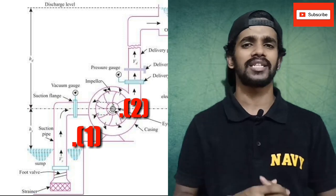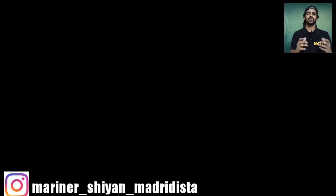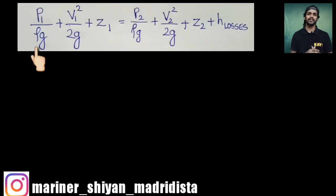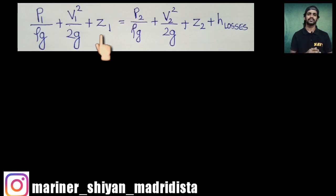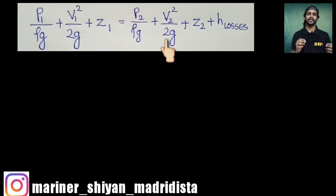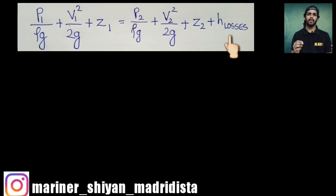Point 1 is the sump level and Point 2 is the eye of the impeller. Bernoulli's equation has a left-hand side and a right-hand side. On the left-hand side: P1/ρg + V1²/2g + Z1. On the right-hand side: P2/ρg + V2²/2g + Z2 + losses. Losses may be in the form of mechanical losses, friction losses, head losses, etc., but the major loss is friction loss.